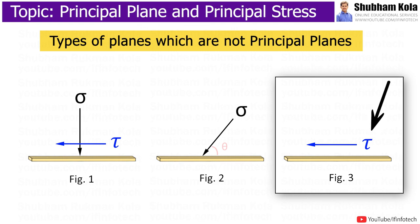In third type of plane, there is shear stress. And for principal plane, the shear stress is zero. Therefore, third type of plane is also not principal plane.